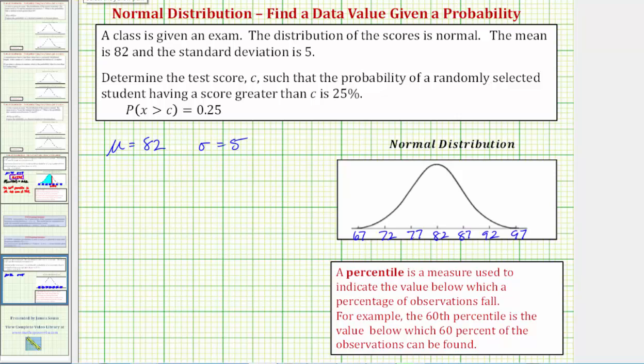And because we know that 50 percent of the data is below the mean of 82, and 50 percent is above, and we also know that 34 percent is between 82 and 87, which is the mean and one standard deviation above the mean,